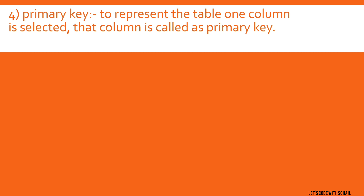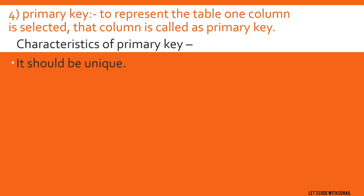Let us first look at an example. Just as in cricket, from the playing 11, one person is chosen to represent the team — we call him the captain. Similarly, in a table, one column is chosen and we call that column the primary key. It represents the entire table. The characteristics of a primary key: it should be unique — it should not be replicated.